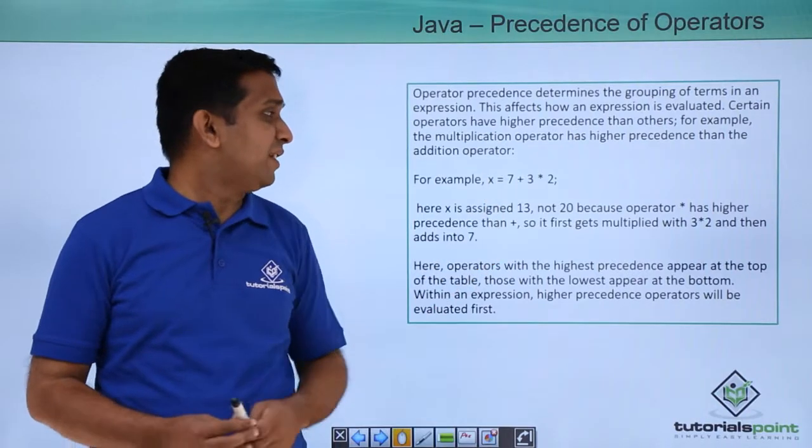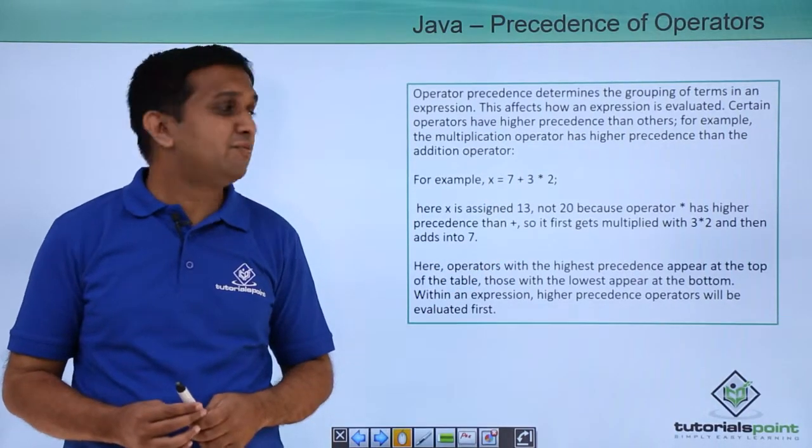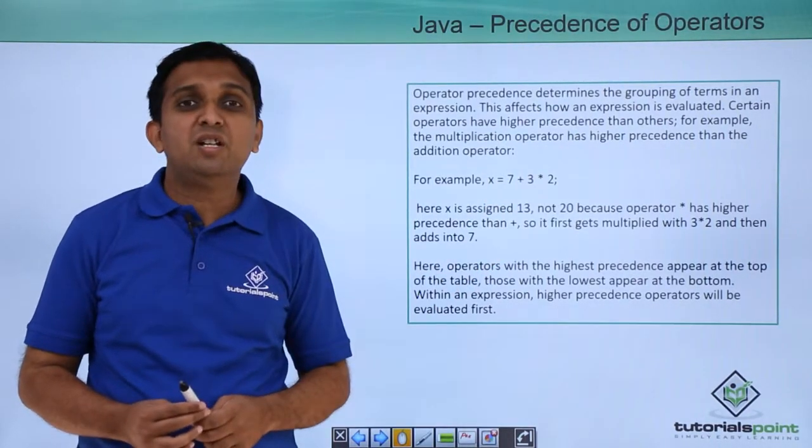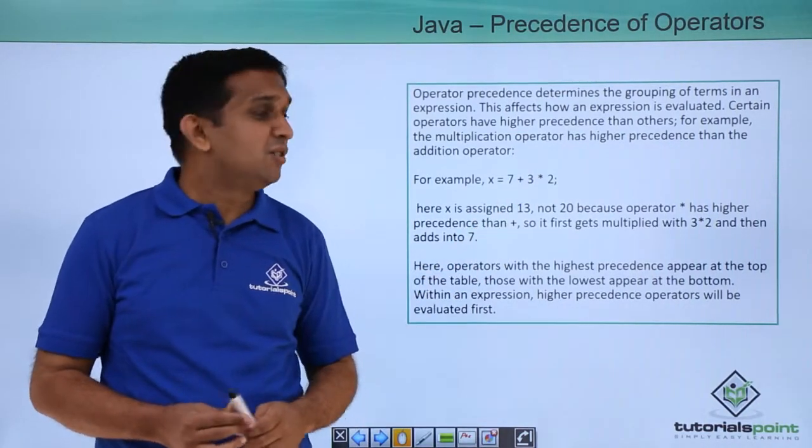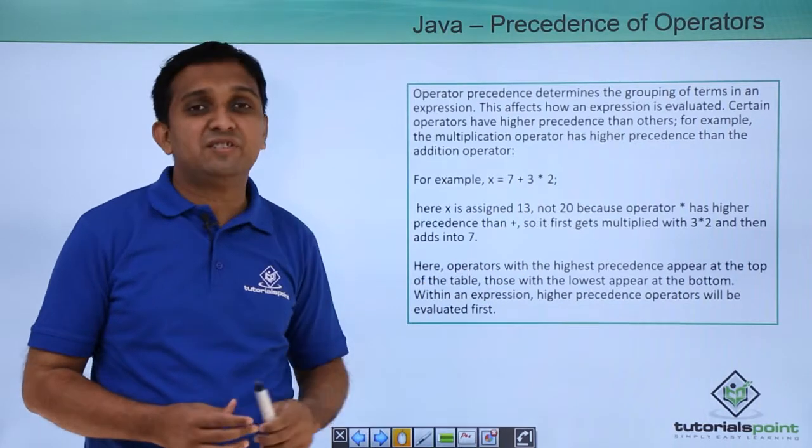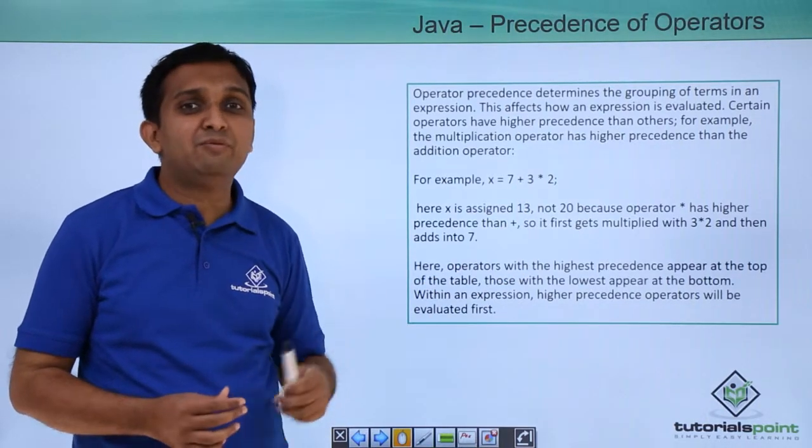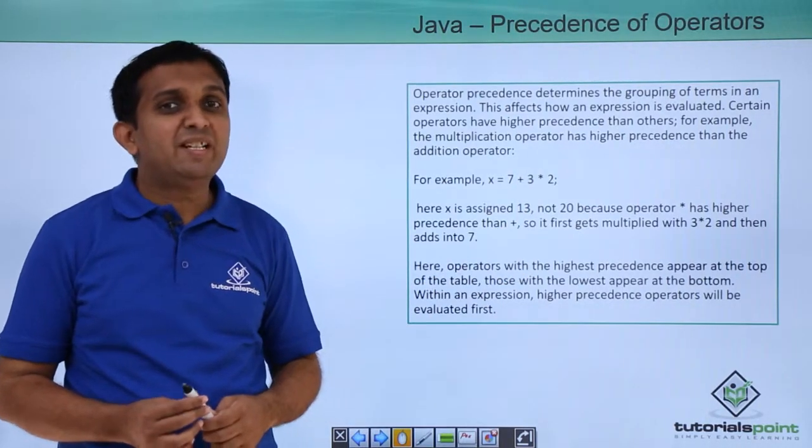One example is shown here where the statement is x equals 7 plus 3 into 2. In this case, the priority of the multiplication is higher than plus. So this operation will happen first: 3 into 2 is 6, plus 7 will be 13. So output will be 13.